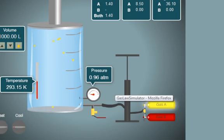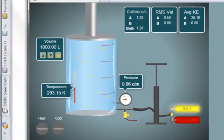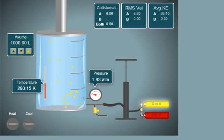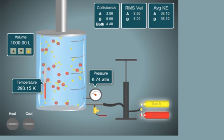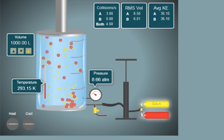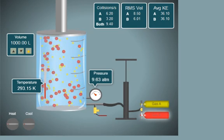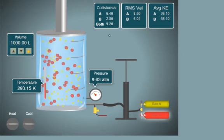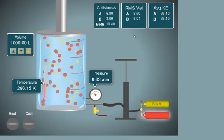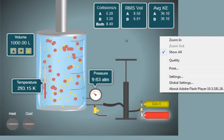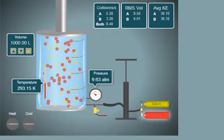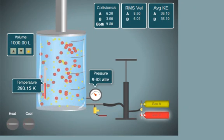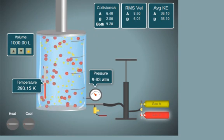One more thing to show you is the actual simulator in operation. You can see that if you tap the handle, more gas will go in. If you tap or highlight the other gas, you can add the other gas, and since they're both highlighted, both gases are going in. We can turn one off and just add one. You can see that the pressure is changing while the volume is locked constant and the temperature is constant. You can add heat or cool it. We'll look at the other boxes later — collisions per second, root mean square velocity, and average kinetic energy. These represent some of the microscopic behaviors of the particles that we're going to relate to the macroscopic measurements.